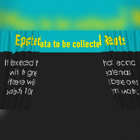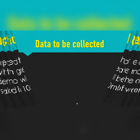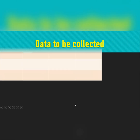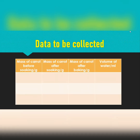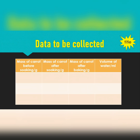We want to collect data using a table. The columns are: mass of the carrot before soaking, mass of the carrot after soaking, mass of the carrot after baking, and volume of water added — starting from 10 ml, then 20, 30, 40 all the way to 100 ml. Notice the units are in the column headings so you don't need to repeat them. And of course, write a nice title for the table.